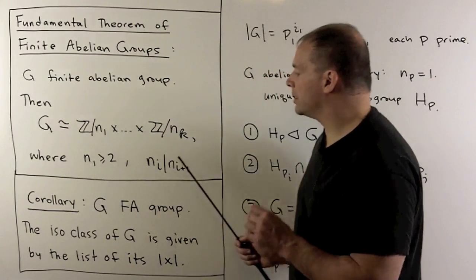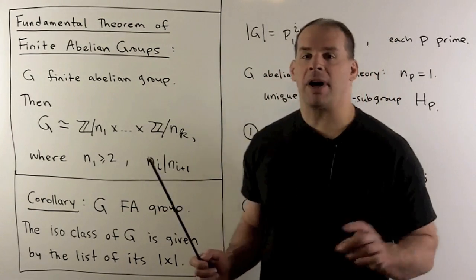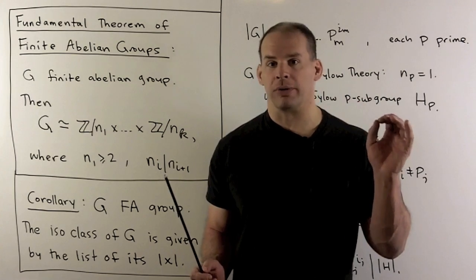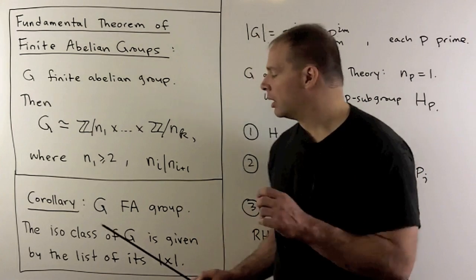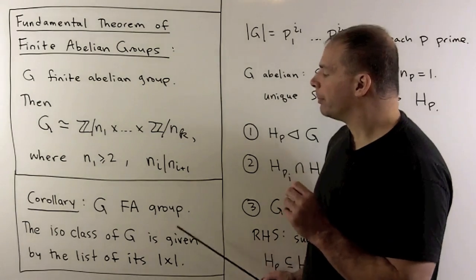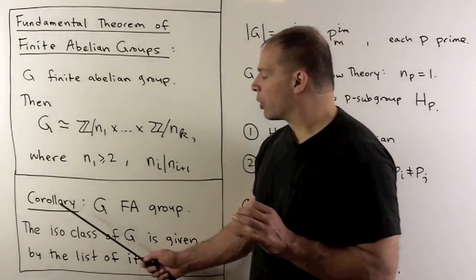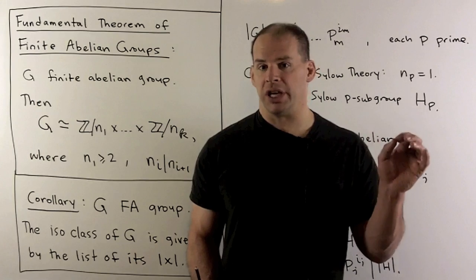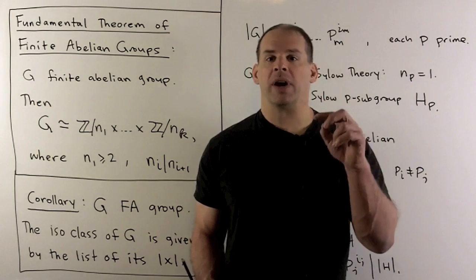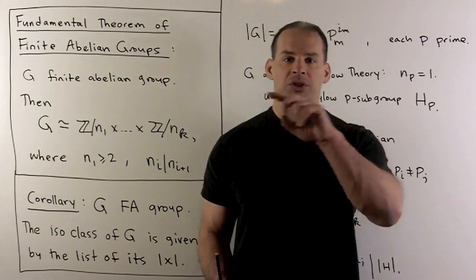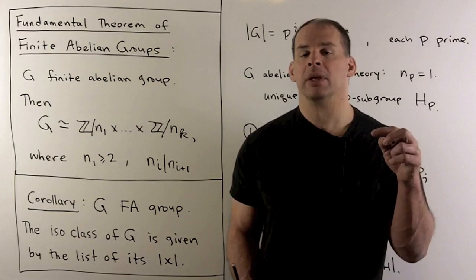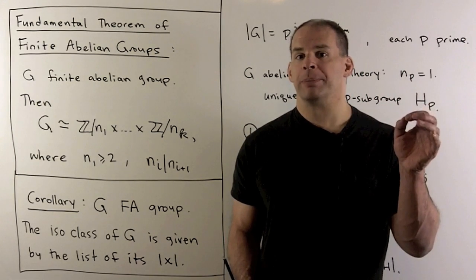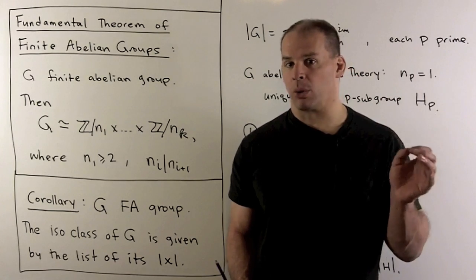In turn, we can take this result and have the following corollary to check whether two finite abelian groups are isomorphic or not. If G is a finite abelian group, the isomorphism class of G is given by the list of the orders of elements of G. So if we have two finite abelian groups, we can list all their elements and compare. If the orders are equal, then the groups are isomorphic; if not equal, then not isomorphic.